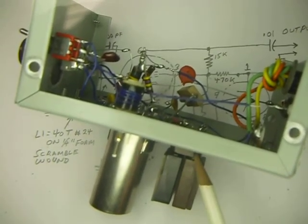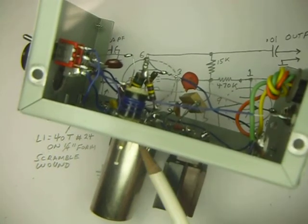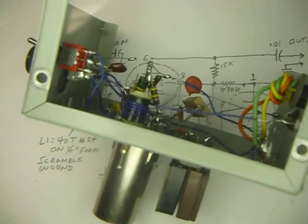The two crystals, of course, into that double crystal socket. And this is the 6U8 or 6EA8 tube. So that's it, guys.